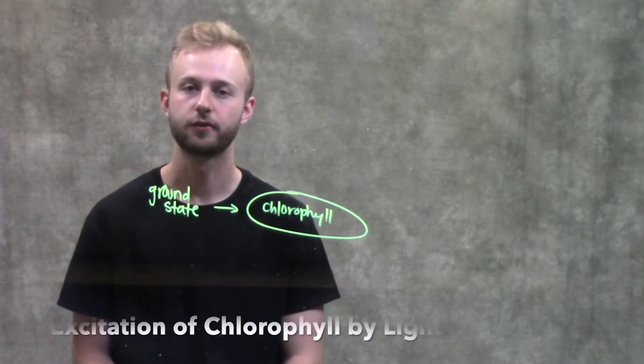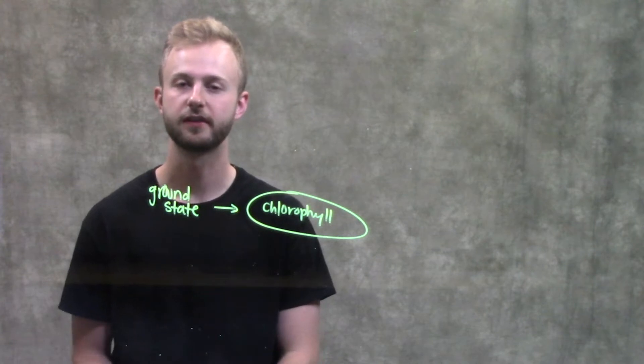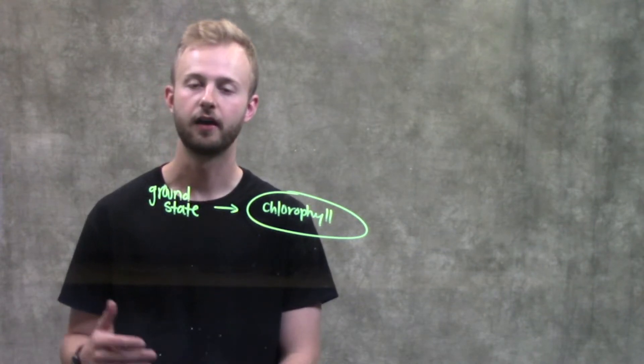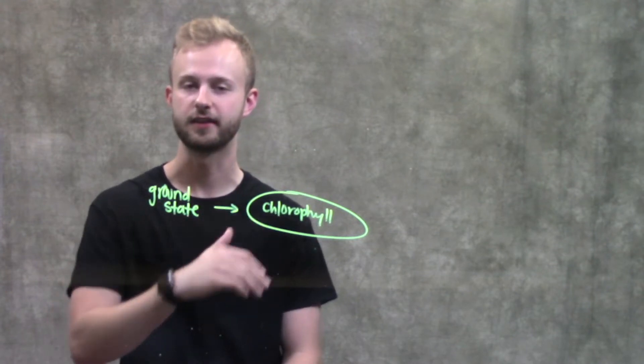This video is going to be about the excitation of chlorophyll by light. Chlorophyll is a photosynthetic pigment, which means that it's going to absorb light in order to excite its electrons from the ground state to an excited state.